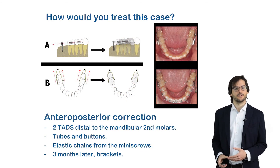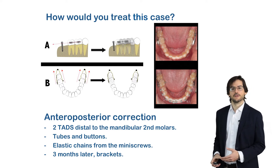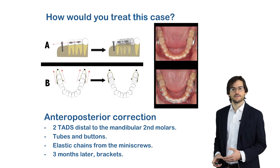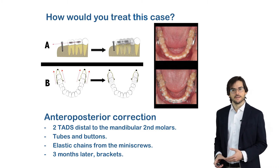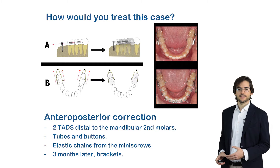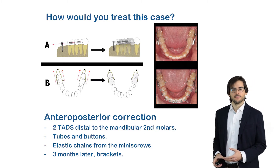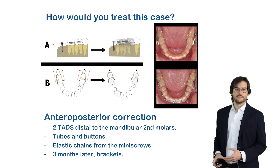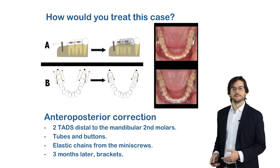Regarding the anterior-posterior correction, two miniscrews were placed distal to the mandibular second molars, and tubes and buttons were bonded on the buccal and lingual surfaces of the molars. Elastic chains were placed from the miniscrews to the molars, and three months later space between the premolars was observed. Then Tip-Edge Plus brackets were placed in the mandibular arch.